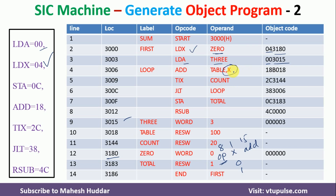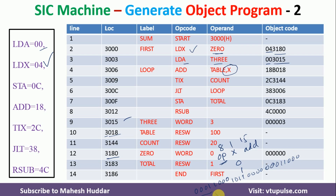Coming back to TABLE,X — because x is present in the operand field, the x bit will become 1, indicating index addressing mode. The ADD instruction opcode is 18, which in binary is 0001 1000. The next bit is 1 for index addressing. The address of TABLE is 3018 — in binary: 3 = 0011, 0 = 0000, 1 = 0001, 8 = 1000. Combining with the x bit set to 1 gives us the object code 18B018.